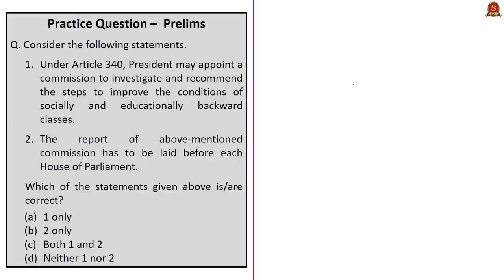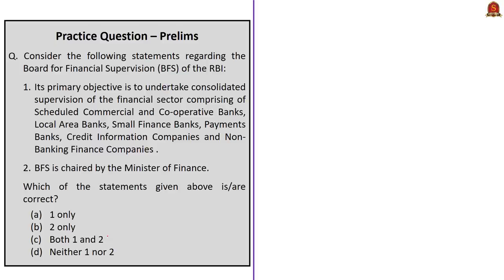Let us now move on to the practice questions discussion session. This is a two-statement question where you need to choose the correct statement or statements. The first statement says: under Article 340, the President may appoint a commission to investigate and recommend the steps to improve the conditions of socially and educationally backward classes — this is correct, as per Article 340 Clause 1. The second statement says the report of the above-mentioned commission has to be laid before each House of Parliament — this is also correct, as per Article 340 Clause 3. So the correct answer is option C, both one and two.